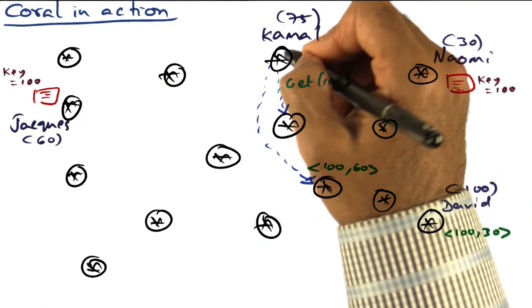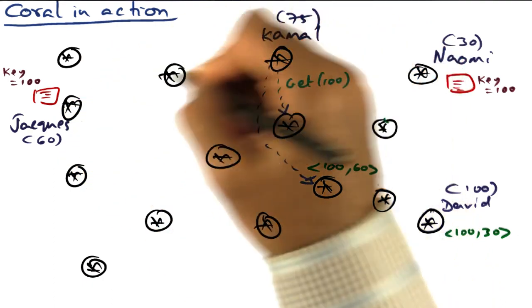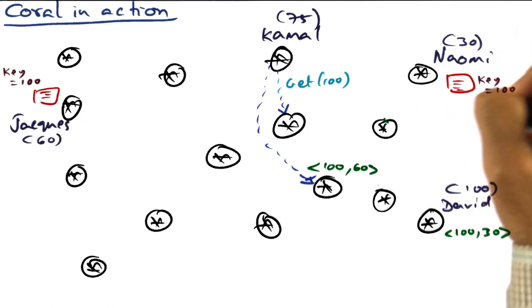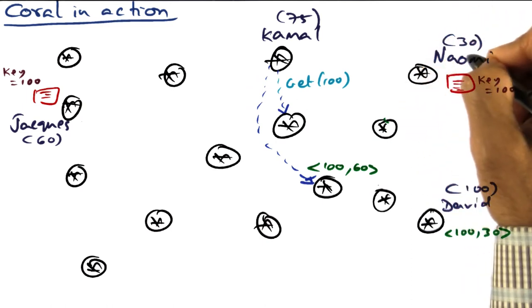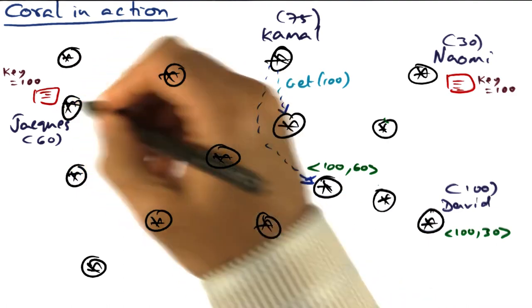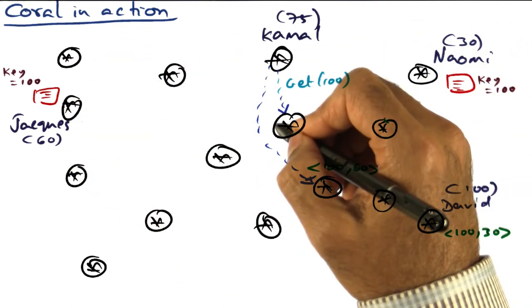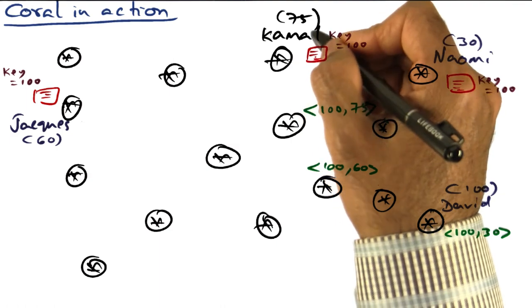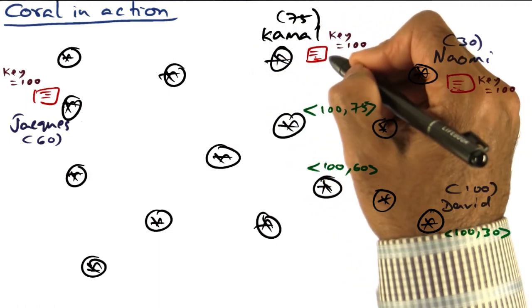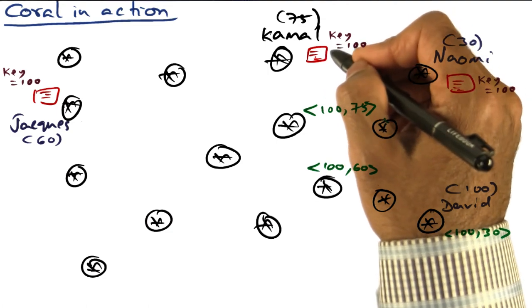So 60 gets returned to Kamal, and Kamal can then go to Jacques and get the content from Jacques. And that way you see that the origin of this particular video, which started with Nomi, is now propagated to Jacques. So the origin server need not get overloaded. And of course, Kamal will turn around and become a good Samaritan himself and say that he's willing to serve as a proxy also.